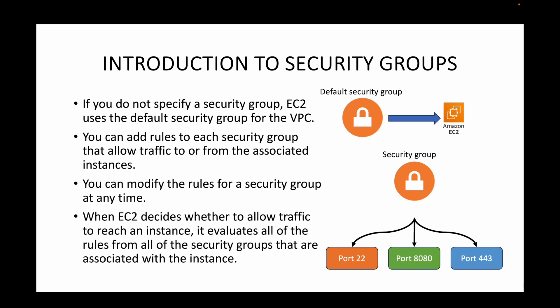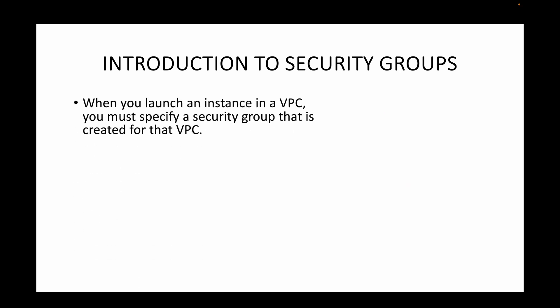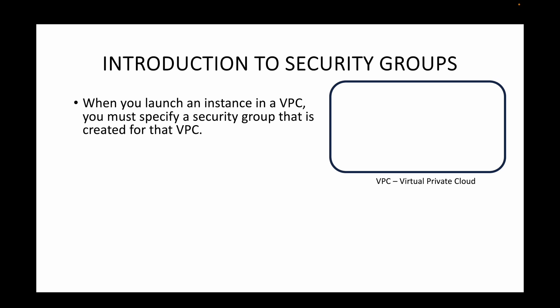When EC2 decides whether to allow traffic to an instance, it evaluates all the rules defined in the security groups associated with that instance. Based on those rules, traffic is allowed to or from your EC2 instances.